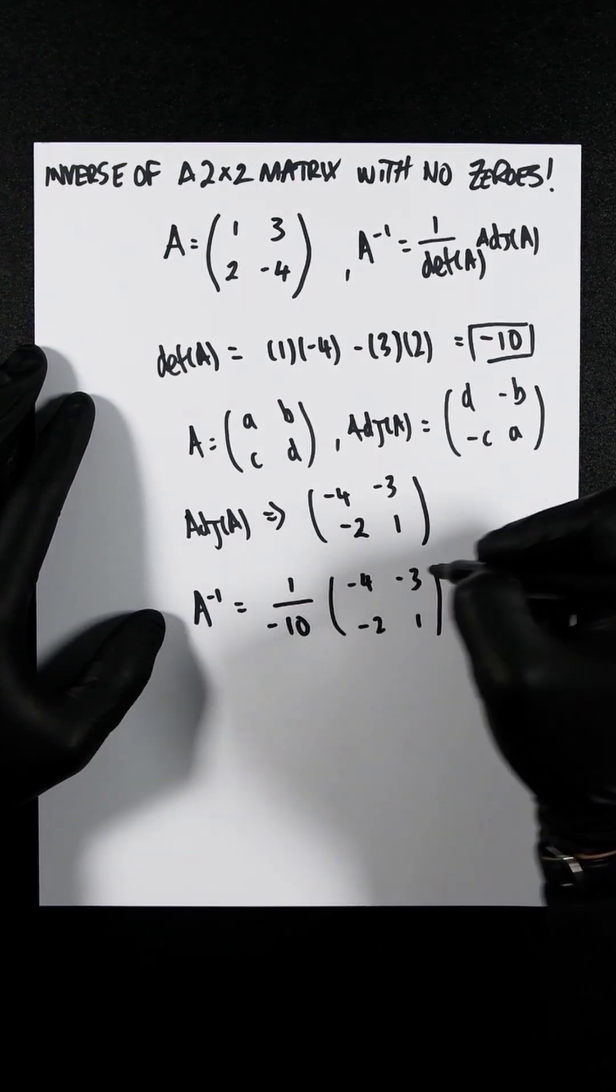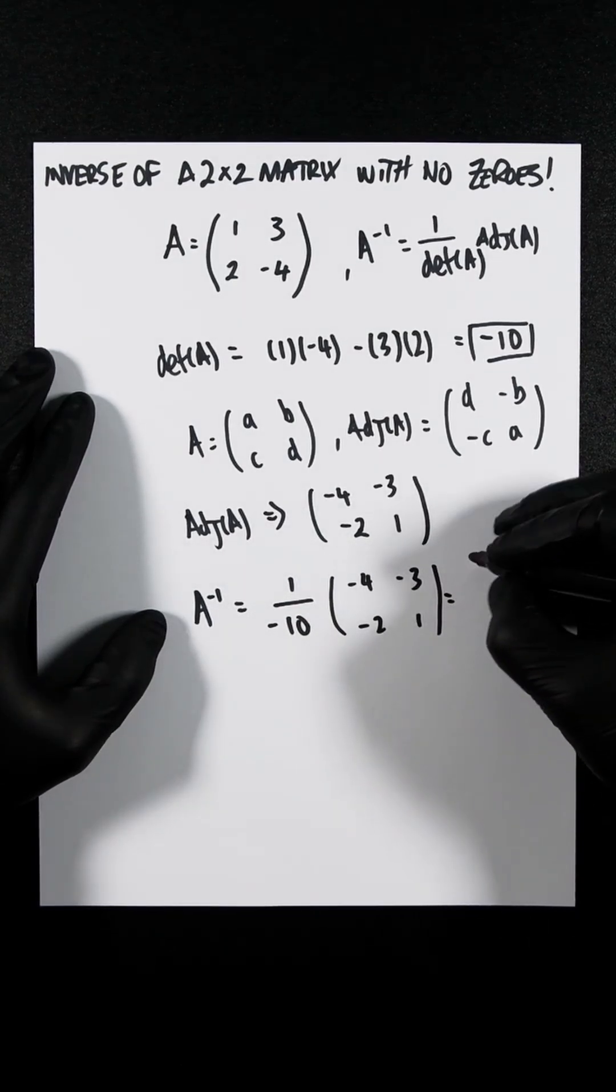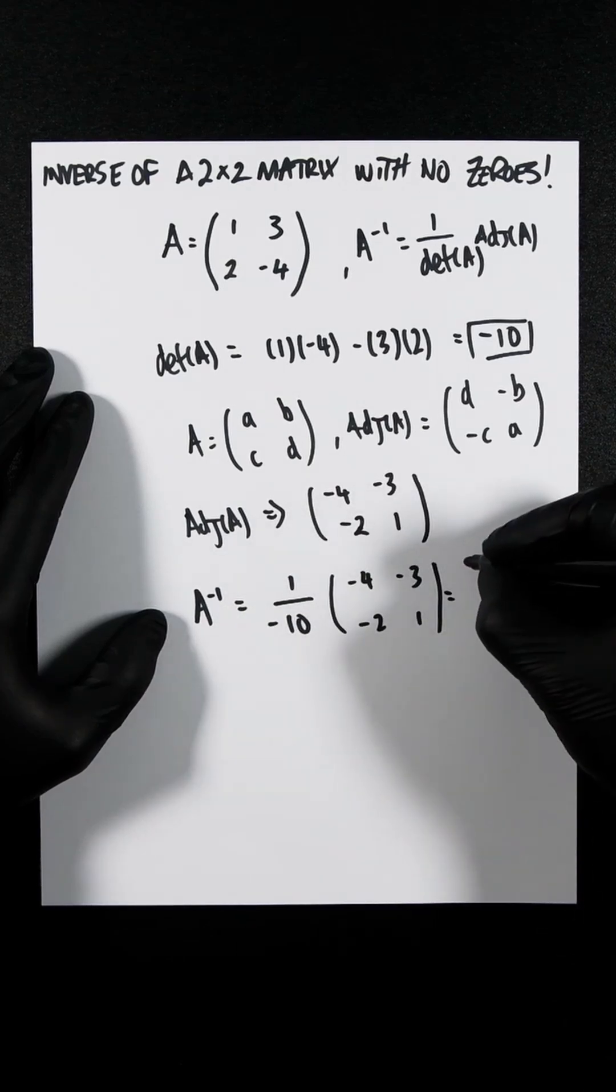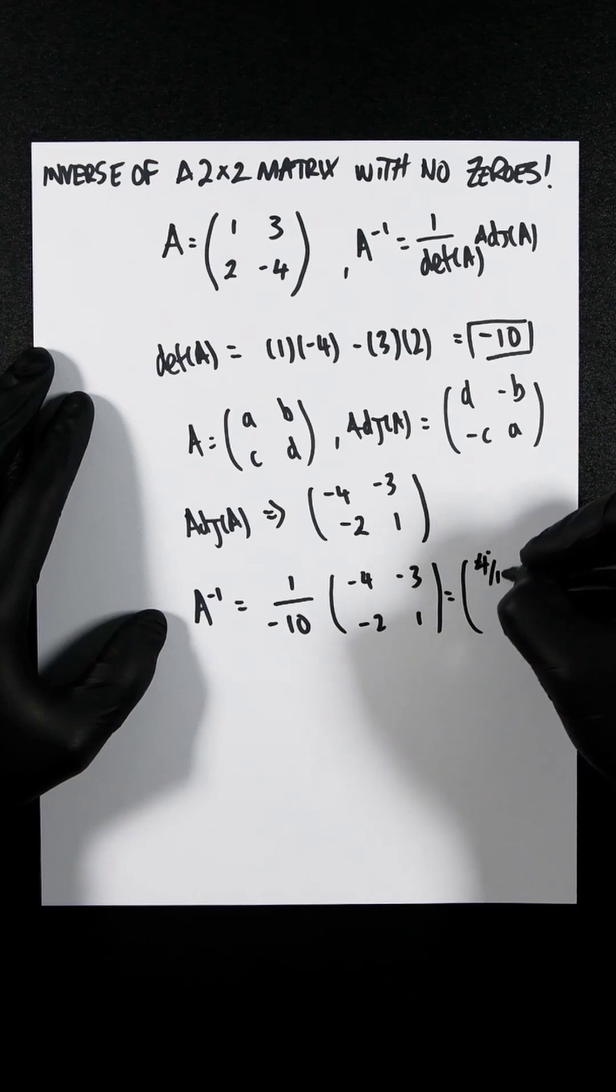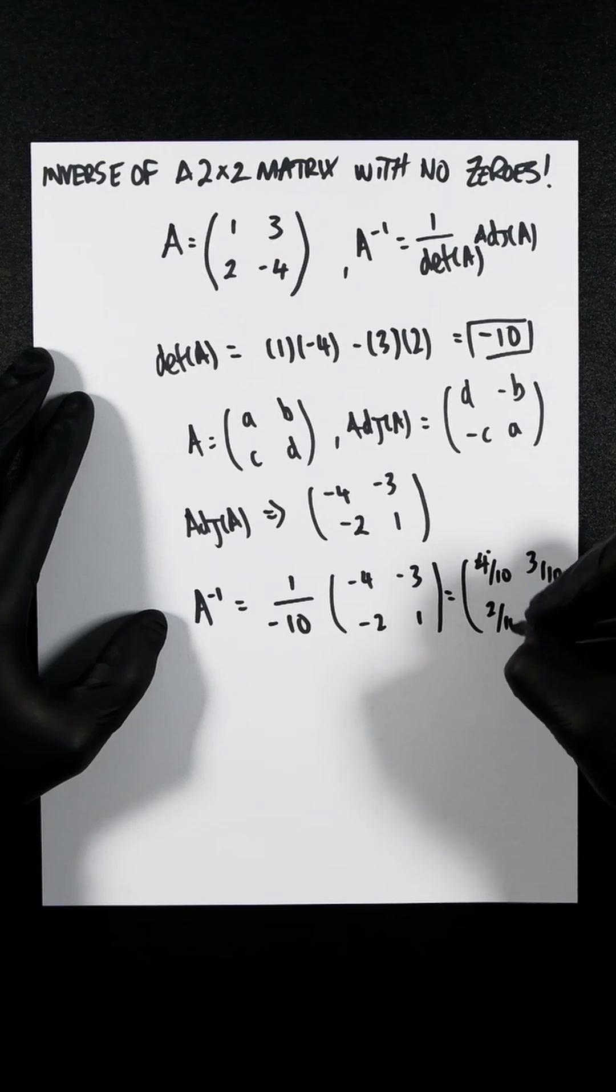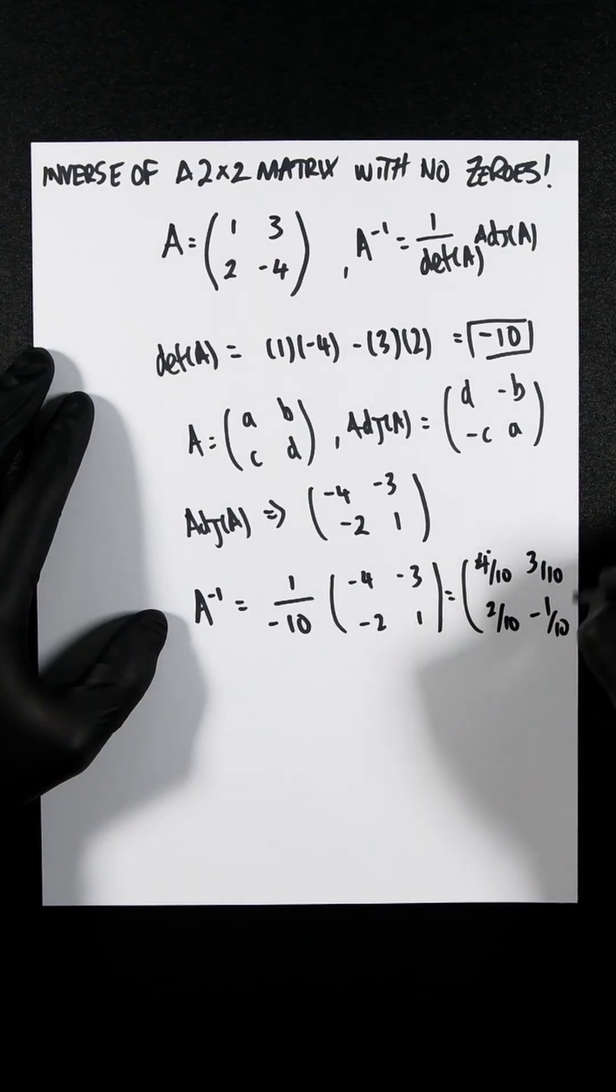We now multiply this to everything in here. So you should get, you do 1 over minus 10 to each one individually. So you're going to get 4 over 10, 3 over 10, 2 over 10, and minus 1 over 10.